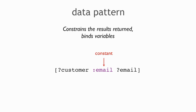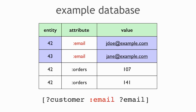So: entity, attribute, value. Constants limit results; variables are bound with those results. If I say customer email email as a data pattern, it's going to match the first two rows of the relation and not the next two, because they don't match on the attribute. Customer is going to get bound to 42 and 43; email is going to get bound to jdo and jane.